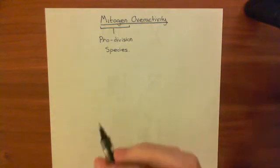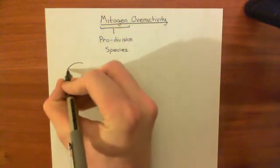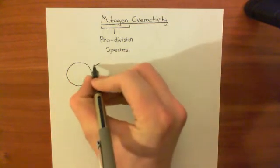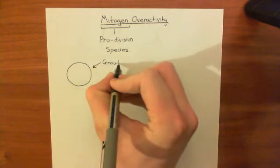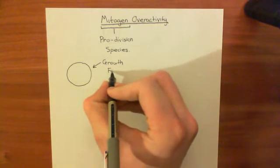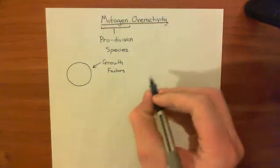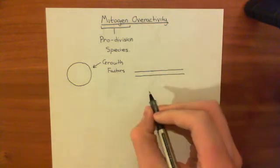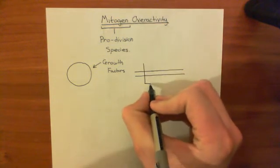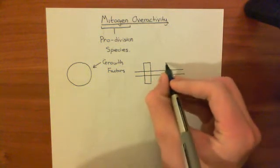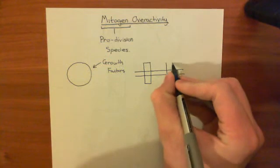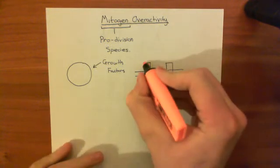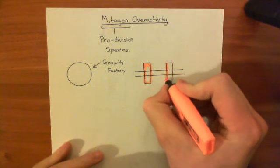Let's begin with our cell, which we're going to stimulate with growth factors. We'll take a little piece of the cell membrane — the phospholipid bilayer — and in it we have the growth factor receptor for this growth factor. I'll color it in orange, which is the color I usually use for growth factor receptors.